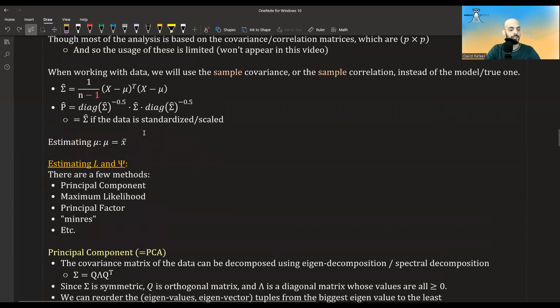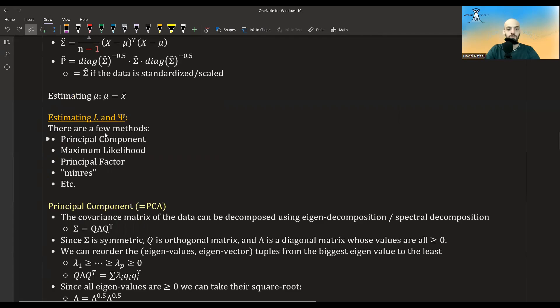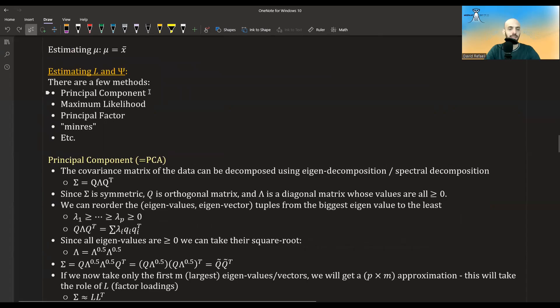This is the maximum likelihood estimator, and it's also a very intuitive estimator. For estimating L and psi, so the pattern matrix and the variance of the specific factors, there's a few methods. There is the principal component method, basically PCA. There's maximum likelihood. There's something called principal factor method. There's something called minres.